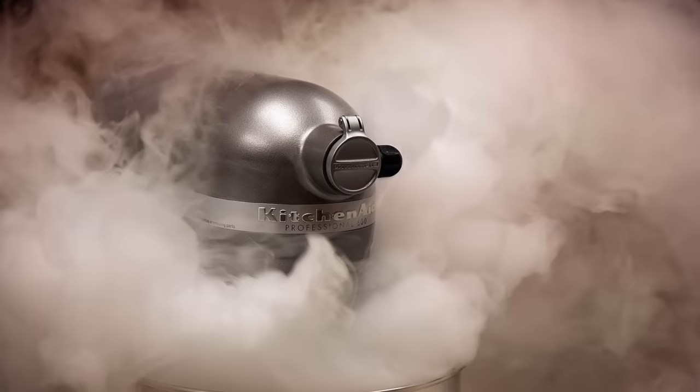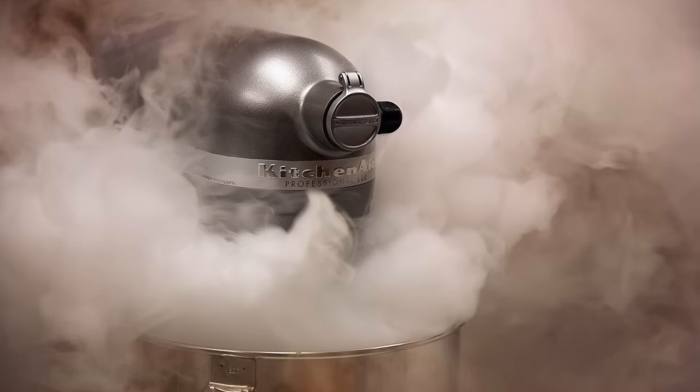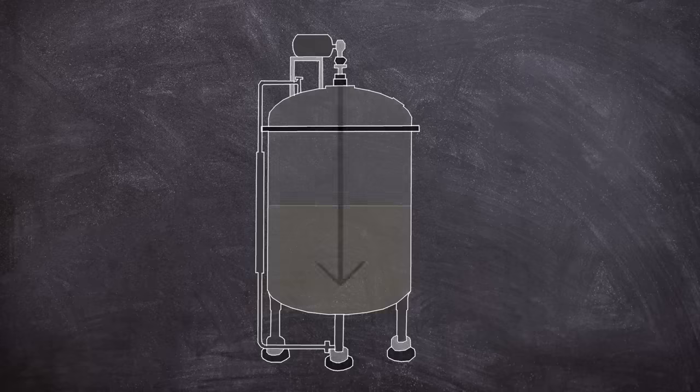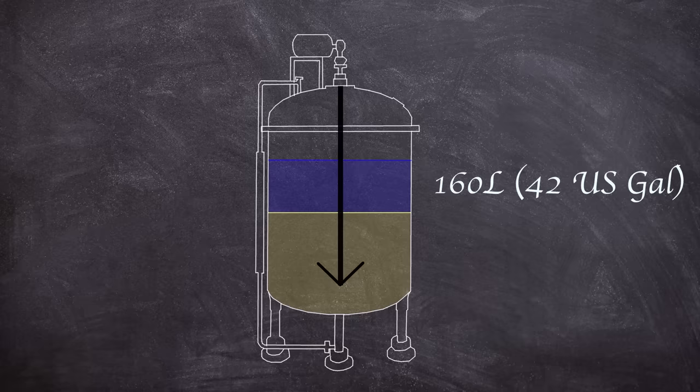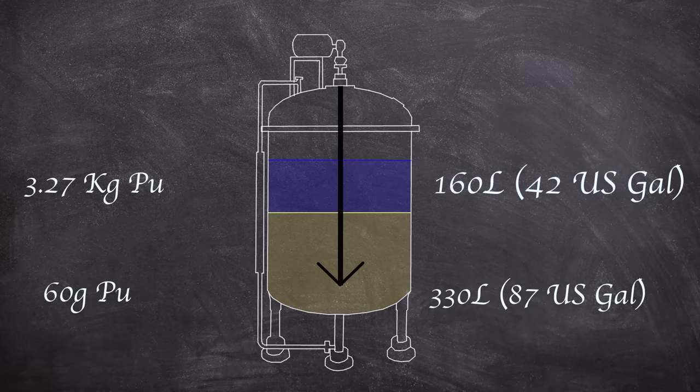The kind of mixer you would find at a bakery albeit for mixing dangerous materials which with my cooking skills is indistinguishable. This tank contained about 295 liters of aqueous stabilized aqueous organic emulsion and the added acid from the new material separated the liquid phases. The liquids ended up settling into two layers, the top being 160 liters of organic material containing around 3.27 kilograms of plutonium. The bottom layer consisted of around 330 liters of aqueous solution and had around 60 grams of plutonium in it.